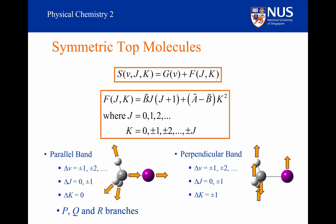For the parallel band, because delta J is equal to 0 and plus or minus 1, we get P, Q and R branches. For the perpendicular band, because delta J is equal to 0 and plus or minus 1, we also get P, Q and R branches.